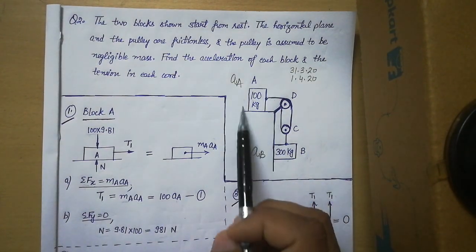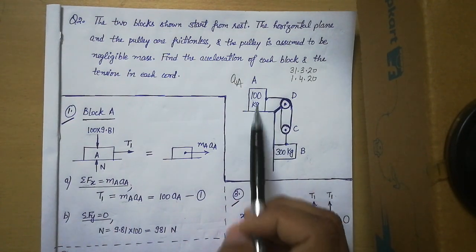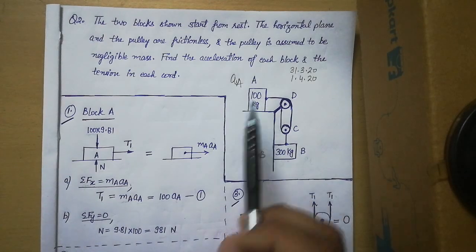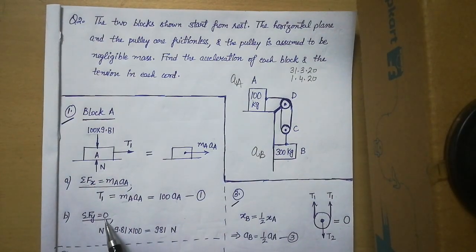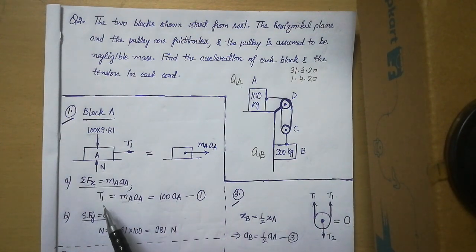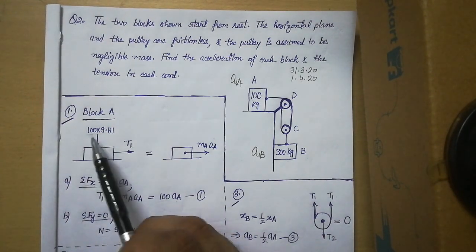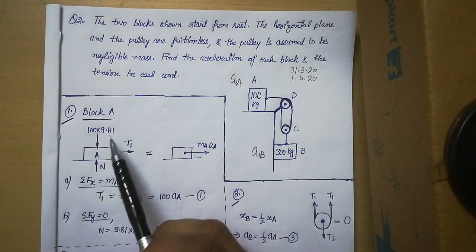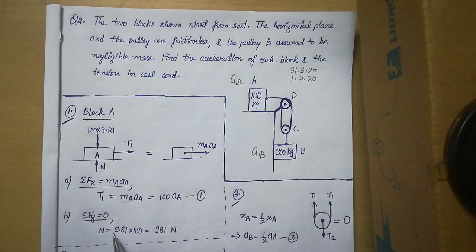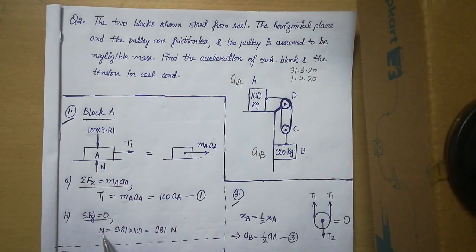Now observe block A again. Its motion is only in the x direction; there is no motion in the y direction. So for the y direction we use summation Fy equal to zero. Two forces act in the y direction: normal force N (positive) and the weight 100 times 9.81 (negative). So N minus 100 times 9.81 equals zero, giving us N equal to 981 N.